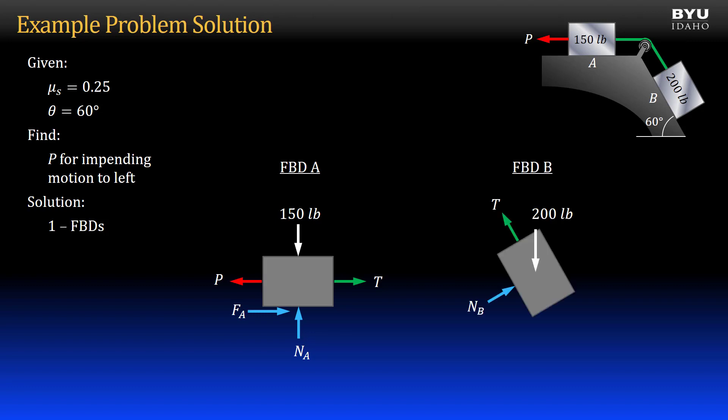For block B, I show the self-weight acting downward and the tension force in the cable, which will be the same magnitude as the tension force on block A due to the pulley. I show the normal force perpendicular to the supporting surface. For the impending motion condition, block B will be on the verge of moving up the incline, so I show the friction force pointing down the incline.